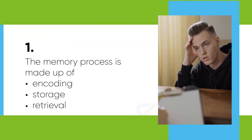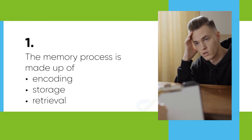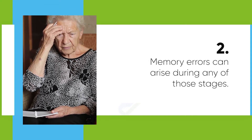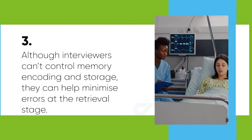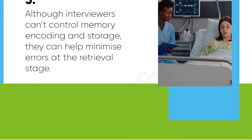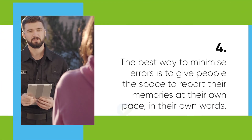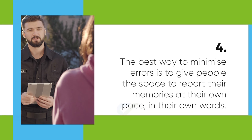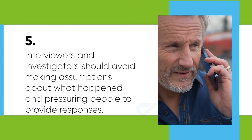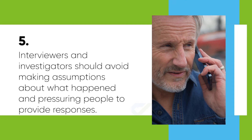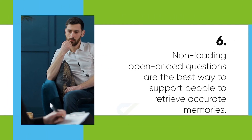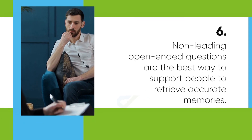Key takeaways: 1. The memory process is made up of encoding, storage, and retrieval. 2. Memory errors can arise during any of those stages. 3. Although interviewers can't control memory encoding and storage, they can help minimise errors at the retrieval stage. 4. The best way to minimise errors is to give people the space to report their memories at their own pace, in their own words. 5. Interviewers and investigators should avoid making assumptions about what happened and pressuring people to provide responses. 6. Non-leading, open-ended questions are the best way to support people to retrieve accurate memories.